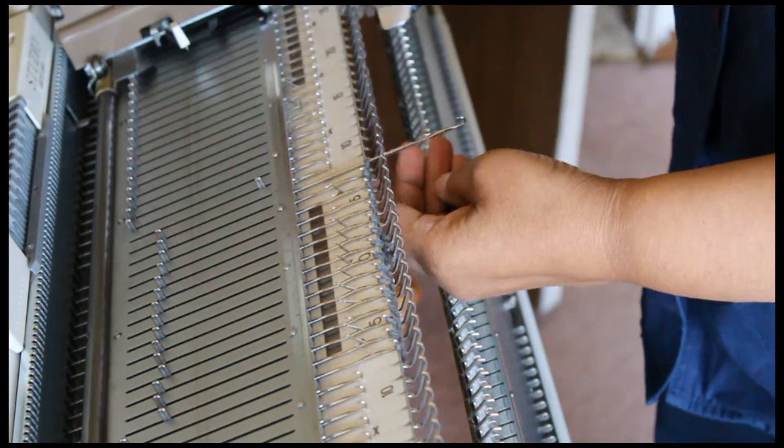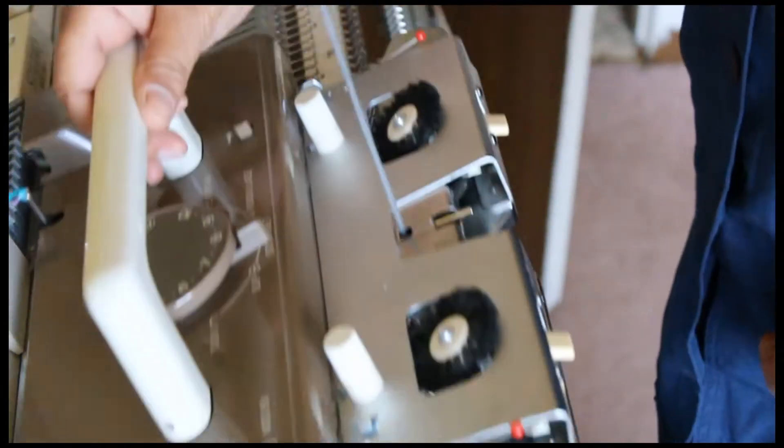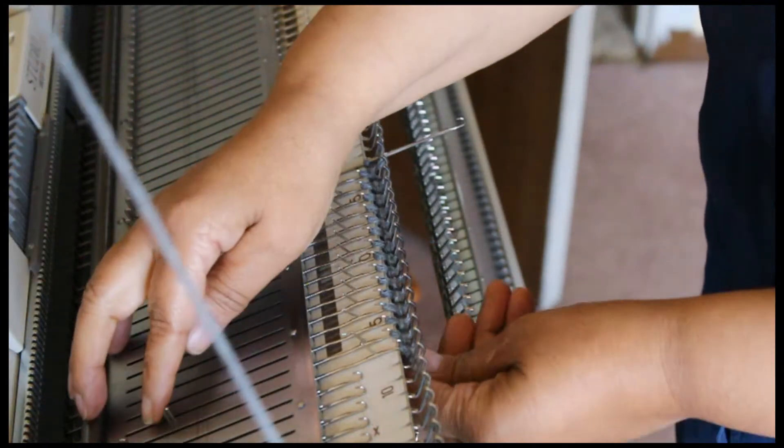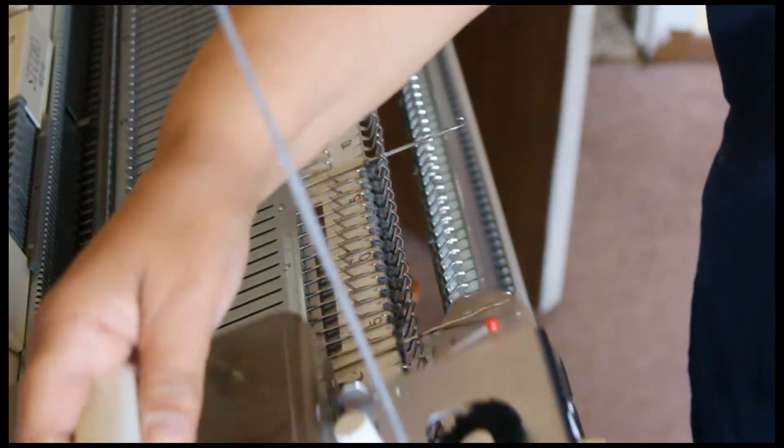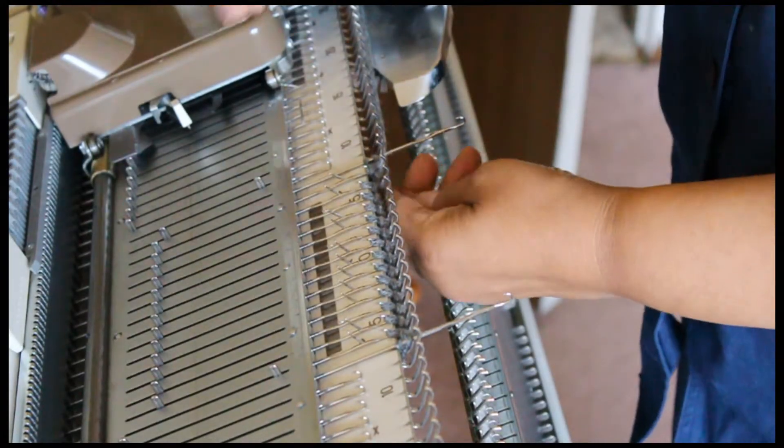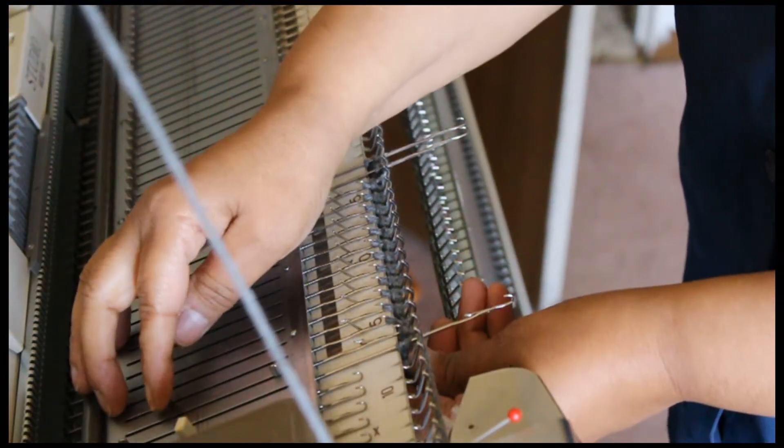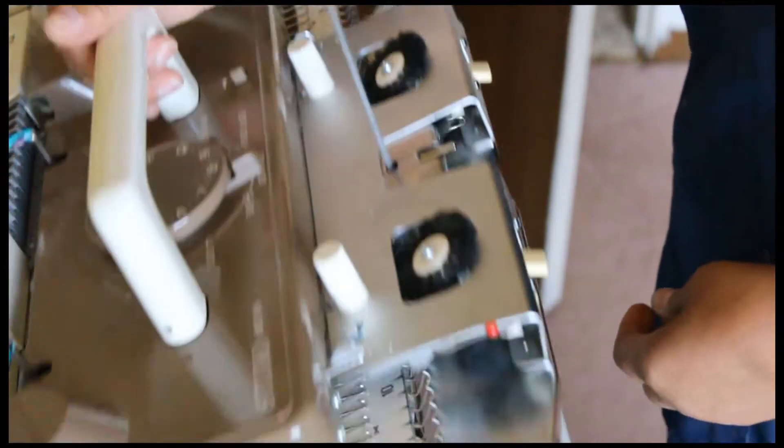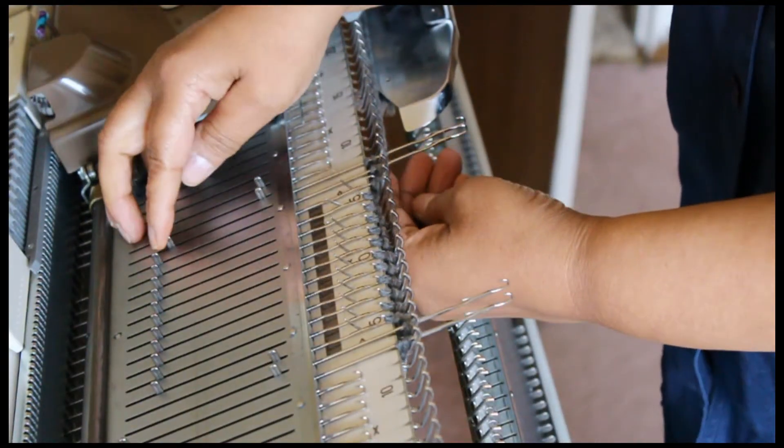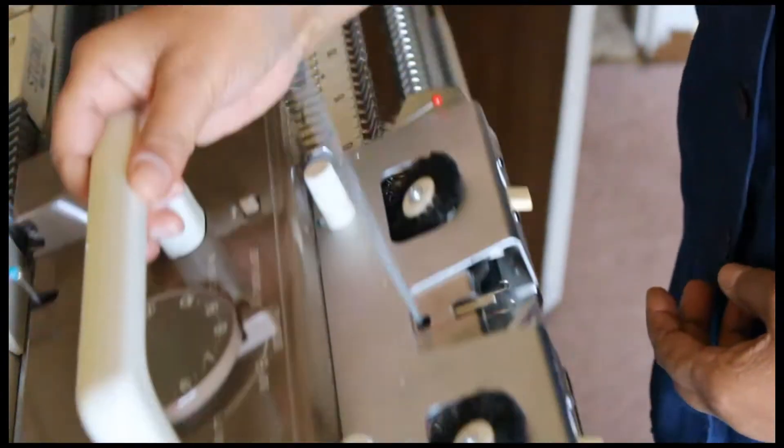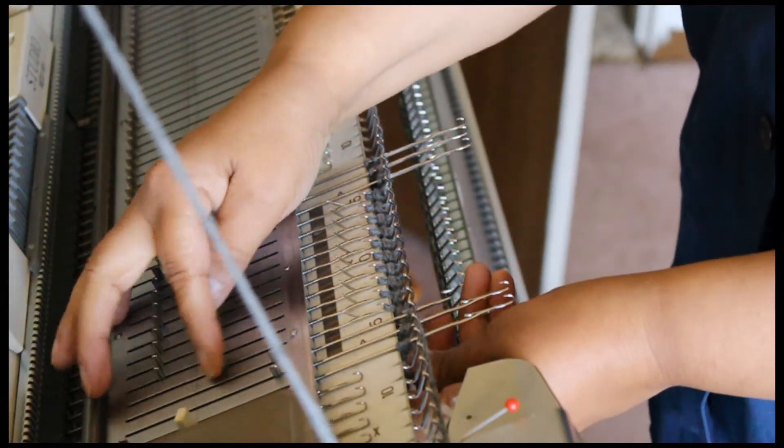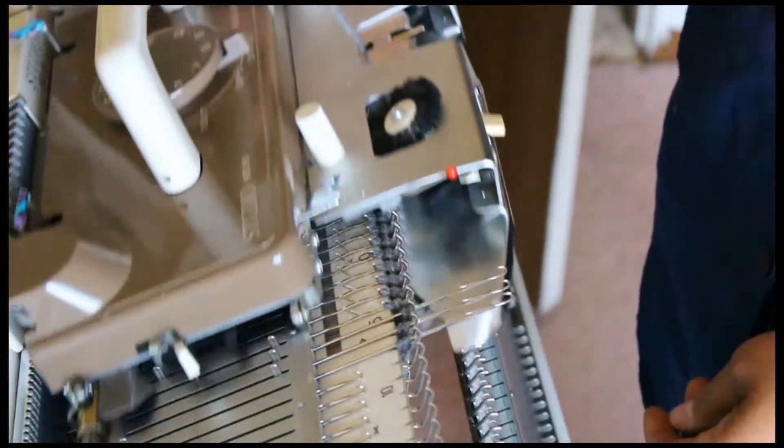Now you're going to set your carriage to hold position. Push out the needle nearest the carriage to hold and knit one row. Repeat the same for the opposite side. You're going to continue with this method until there are four needles remaining in the center.